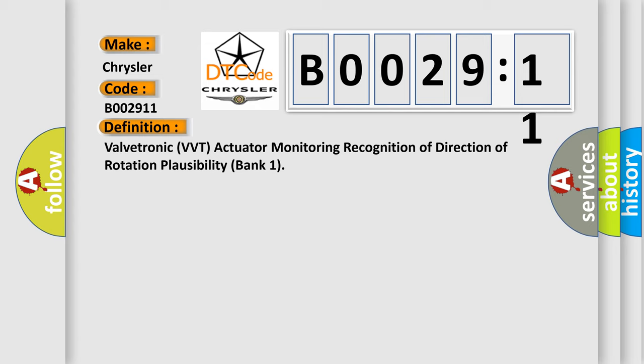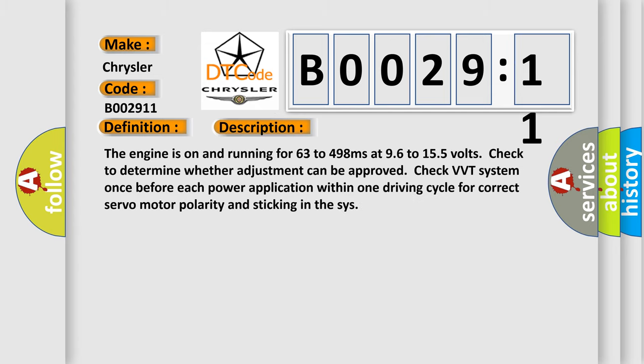And now this is a short description of this DTC code. The engine is on and running for 63 to 498 milliseconds at 96 to 155 volts check to determine whether adjustment can be approved. Check VVT system once before each power application within one driving cycle for correct servo motor polarity and sticking in the SIS.